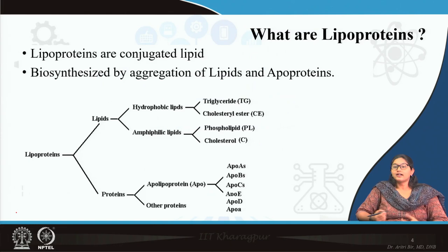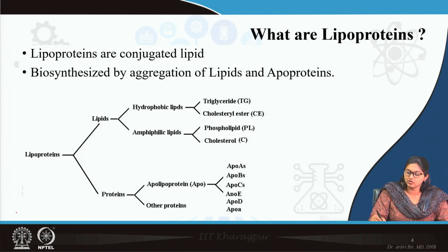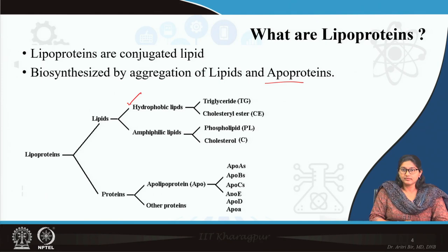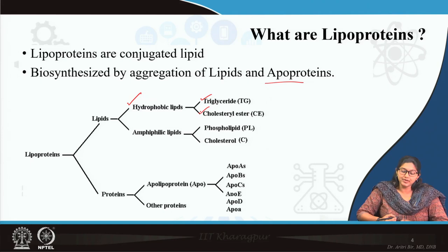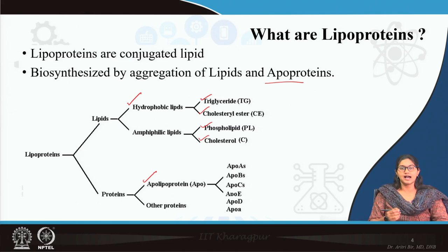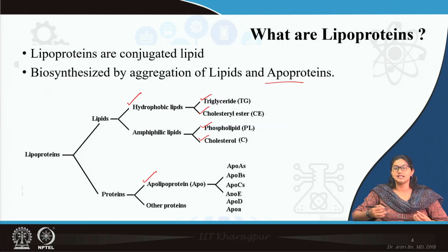What are lipoproteins? Lipoproteins are a conjugated form — a conjugation between lipid and protein — and here in lipoprotein the protein part is known as apoproteins. Lipids in lipoprotein can be either hydrophobic lipids such as triglycerides and cholesterol esters, or amphipathic lipids like phospholipids or cholesterol. Remember, cholesterol is more hydrophilic in comparison to cholesterol ester, where fatty acids are attached. The protein part contains apoproteins as well as other proteins — multiple apoproteins: Apo A, Apo B, Apo C, Apo D, Apo E.